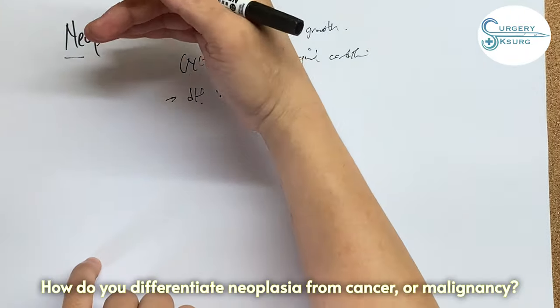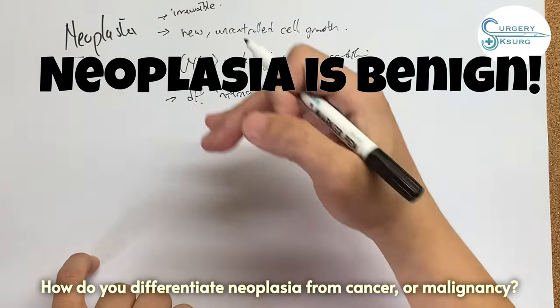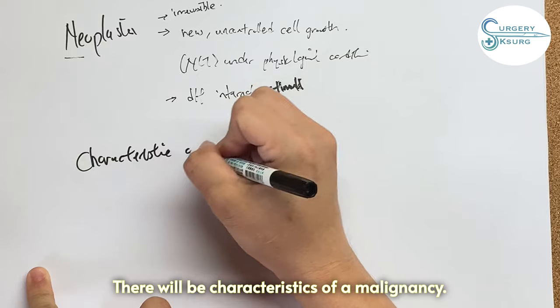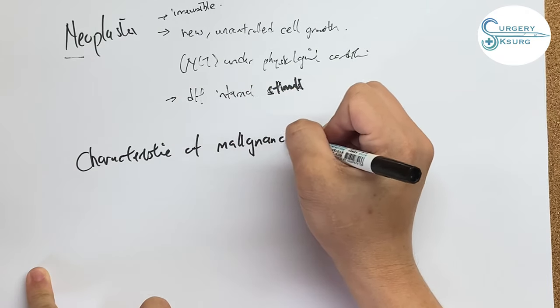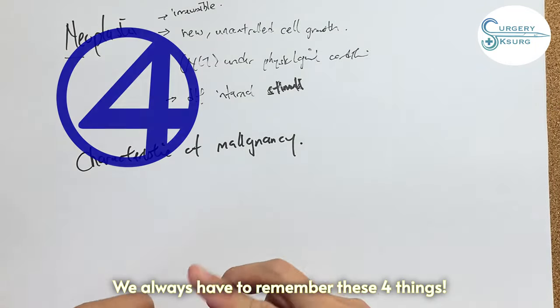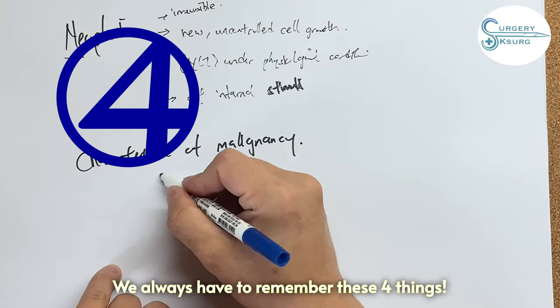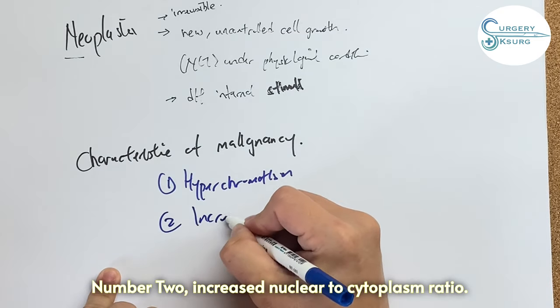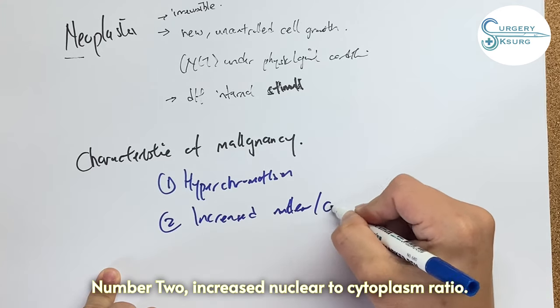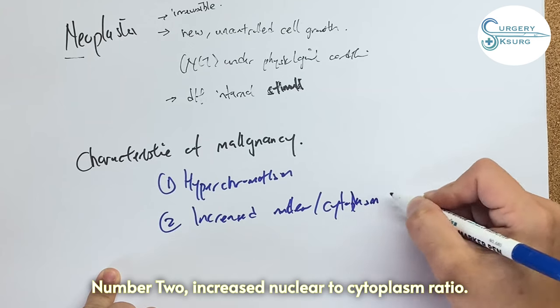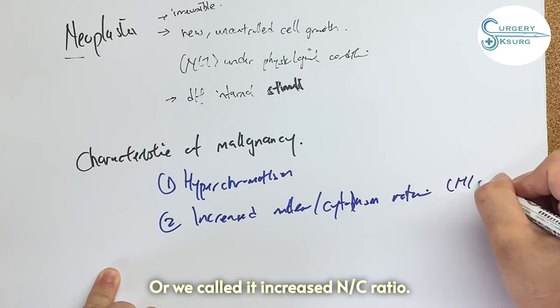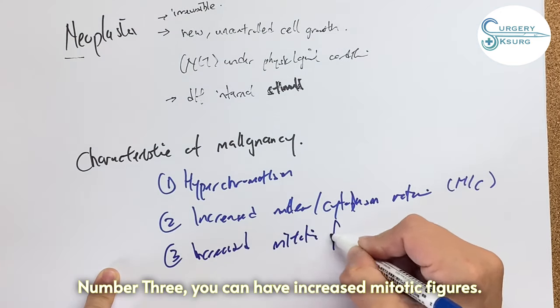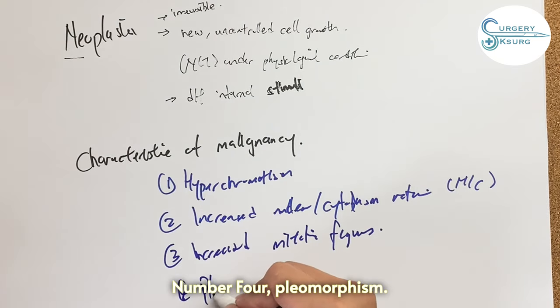So how do you differentiate neoplasia to cancer or malignancy? That will be the characteristics of malignancy. These are the four things we always have to remember: hyperchromatism, number two is increased nuclear to cytoplasm ratio or we call it increased NC ratio, number three is increased mitotic figures, and number four is pleomorphism.